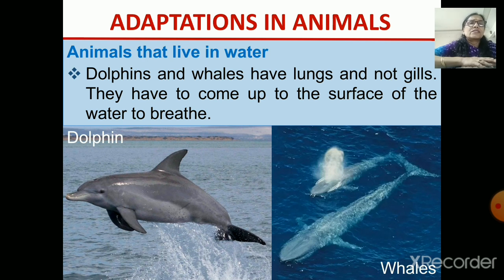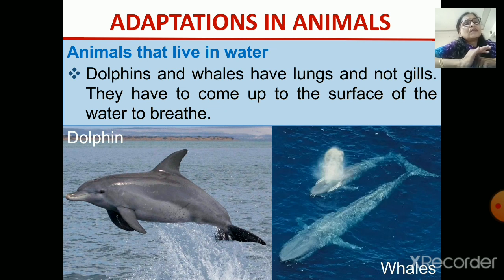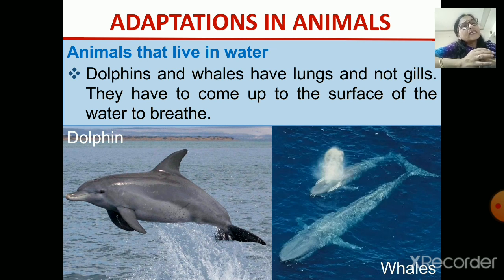About the water — the animals which live in water are known as aquatic animals. A very well-known example of the aquatic animal is a fish. Others are dolphins, whales, seals — many are there. Fish take in the oxygen which is dissolved in the water through the gills and they breathe through the gills.